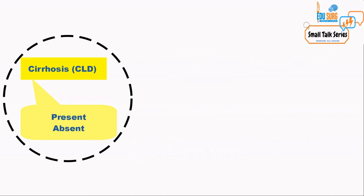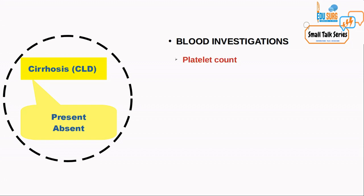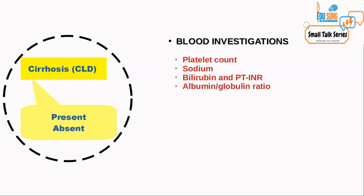Based on the history and examination, if you suspect your patient to have CLD, we do some investigations. There are blood markers of CLD such as: low platelet count — less than 150,000 is worrisome and less than 100,000 is very worrisome — low sodium, elevated bilirubin, deranged PT/INR, and albumin-globulin ratio reversal, which is a very significant marker of cirrhosis. You also have scoring systems such as the NAFLD score and many others which help identify if the patient has fibrosis or cirrhosis.